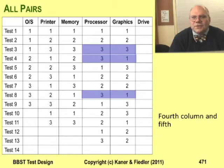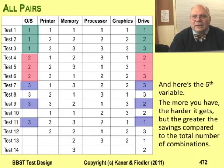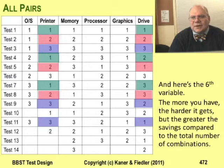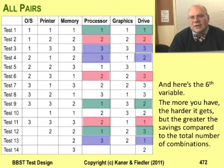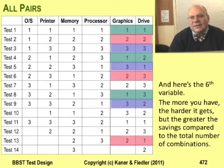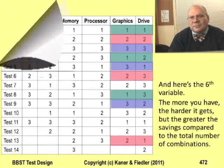There are pairs of three with three and three with one. I create test 13 for the three with the two, and here's how I add the sixth variable. I actually suspect I could have fit these six variables into 12 or 13 tests, but 14 is a lot less than 729 — and that's what we started with.